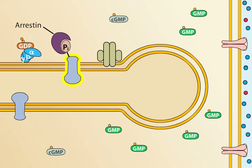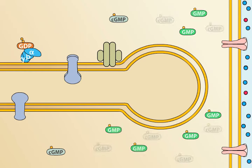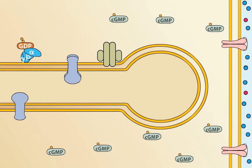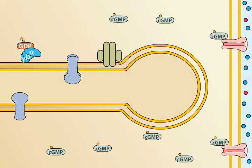Without activated transducin, phosphodiesterase also turns off. Finally, through a multi-step pathway, the cell converts rhodopsin back to a form that can absorb light. Also in the dark, the enzyme guanylate cyclase again builds up the levels of cyclic GMP. Cyclic GMP opens the ion channels, allowing an influx of ions and depolarizing the cell.